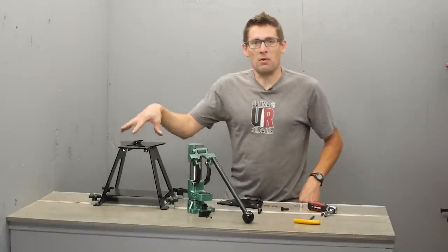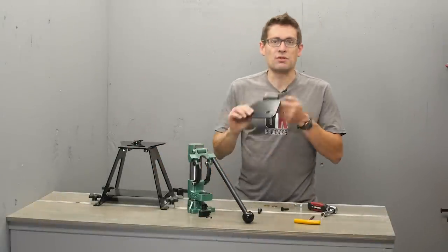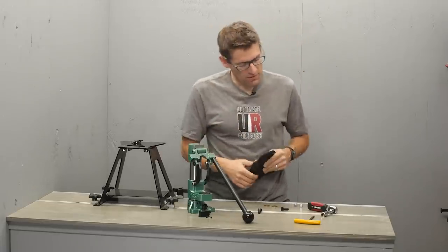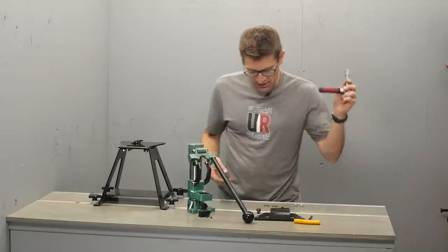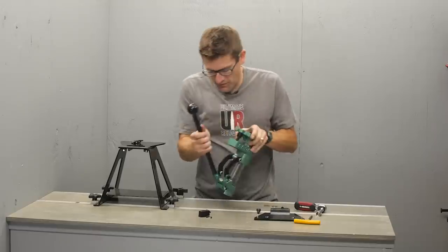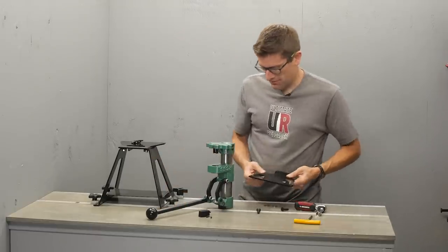So I've got my inline fabrication ultramount. This has the quick change top system. I've got a number 26 quick change top plate and that's going to work with the RCBS Summit. Got a 7/32 Allen key and a 9/16 socket and driver. I'm going to set this upside down.